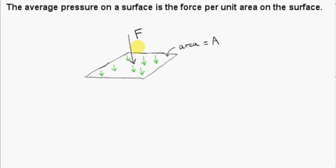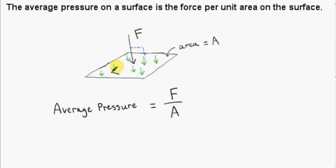Let's call the magnitude of this force F. Now the average pressure on the surface is defined to be the force per unit area. To work that out we take the magnitude of the force, which is F, and divide by the area. So we could consider a unit area of this surface — that is an area of one meter squared. We can just take a square of side one meter, so its area is one meter squared. So we are interested in the average force on each square meter of this area.